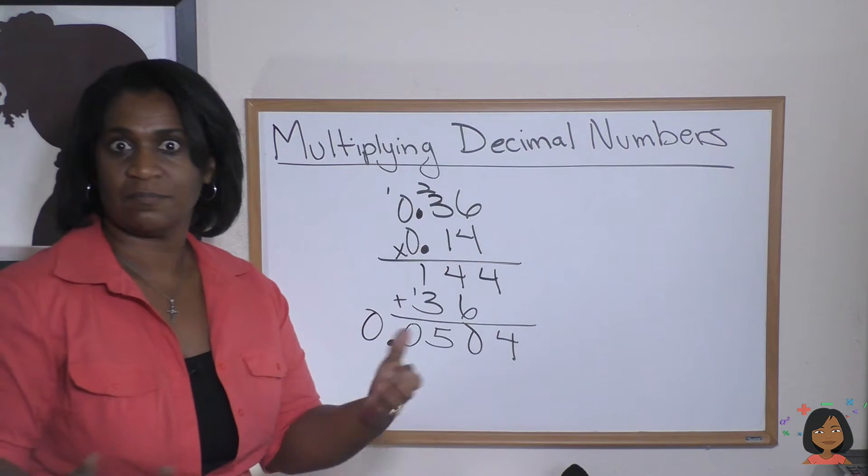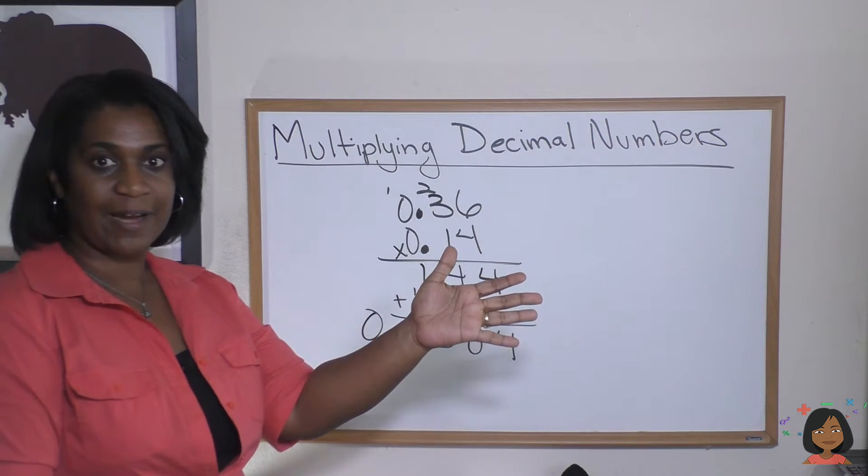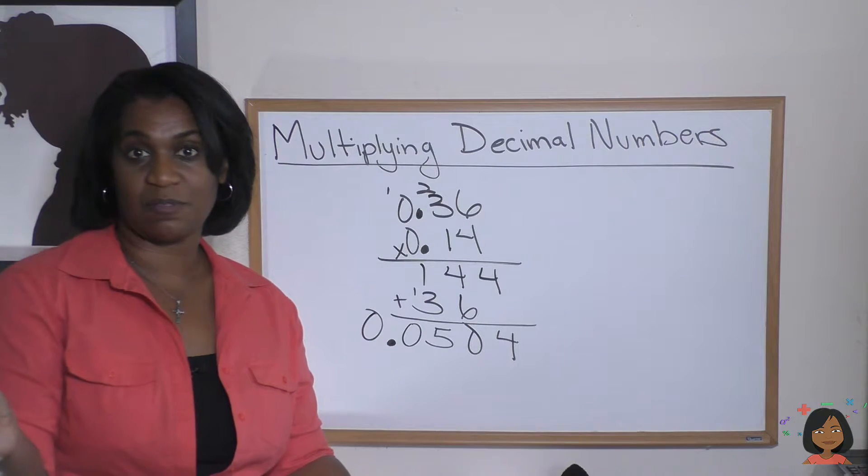One, two, three, four. That's it. That's the rule. Multiply like regular. Account for your decimals. All right.